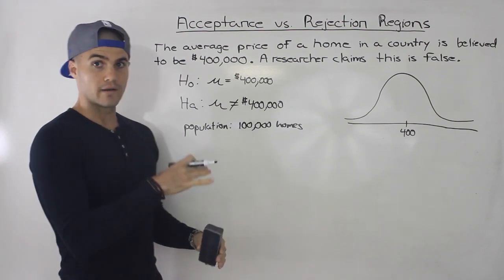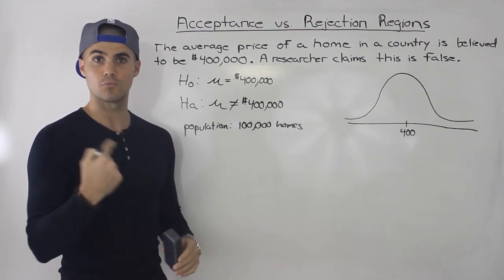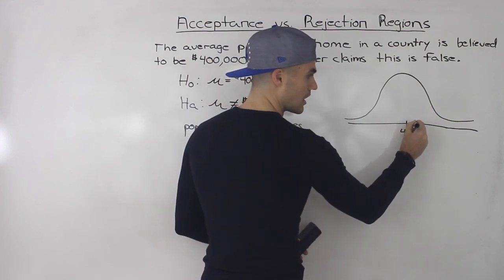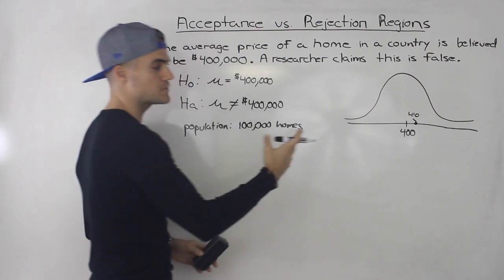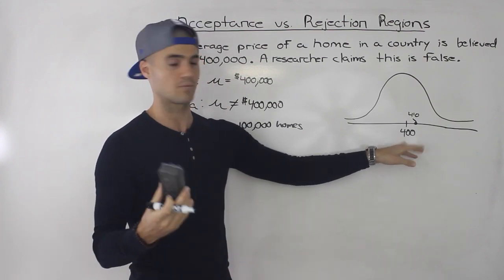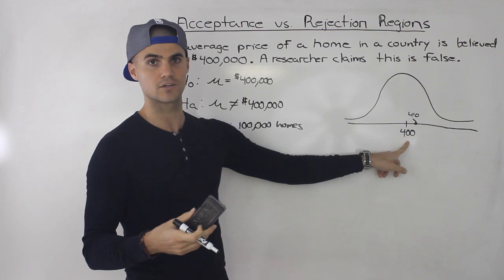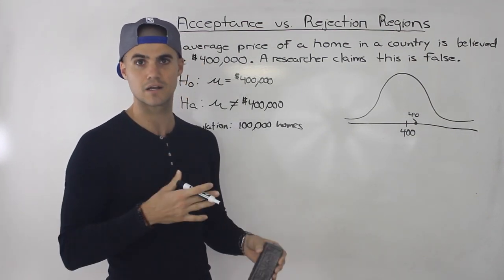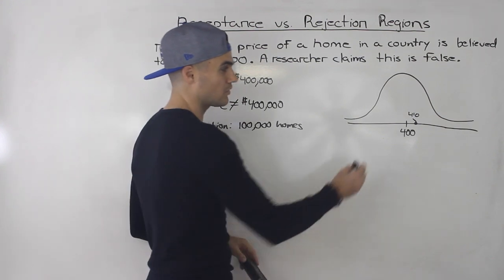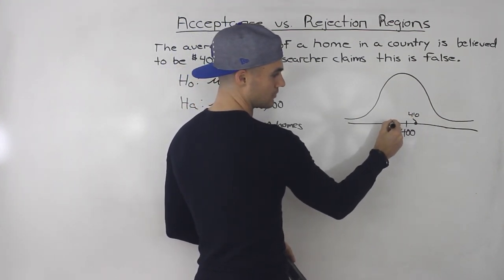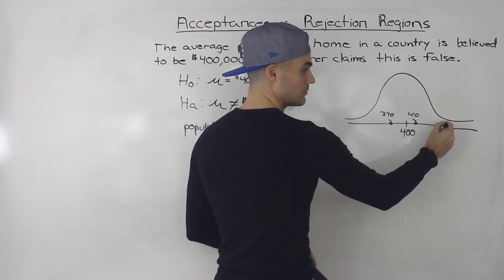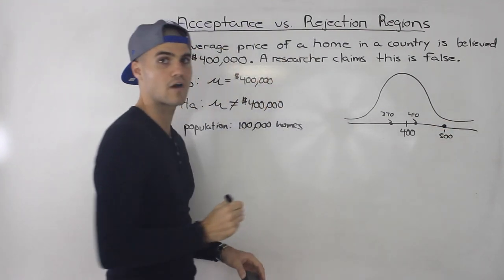What's going to happen is we take a sample and get a sample mean. The mean will very rarely be exactly the hypothesized value of $400,000 — it will deviate a little because we're not taking all 100,000 homes. So one sample might be $410,000, another might be $370,000, and another might deviate more, say $500,000.